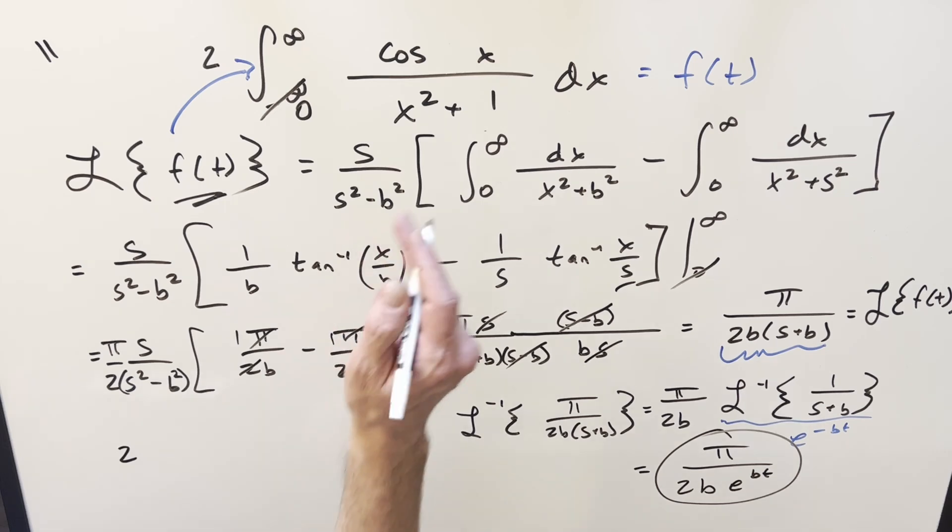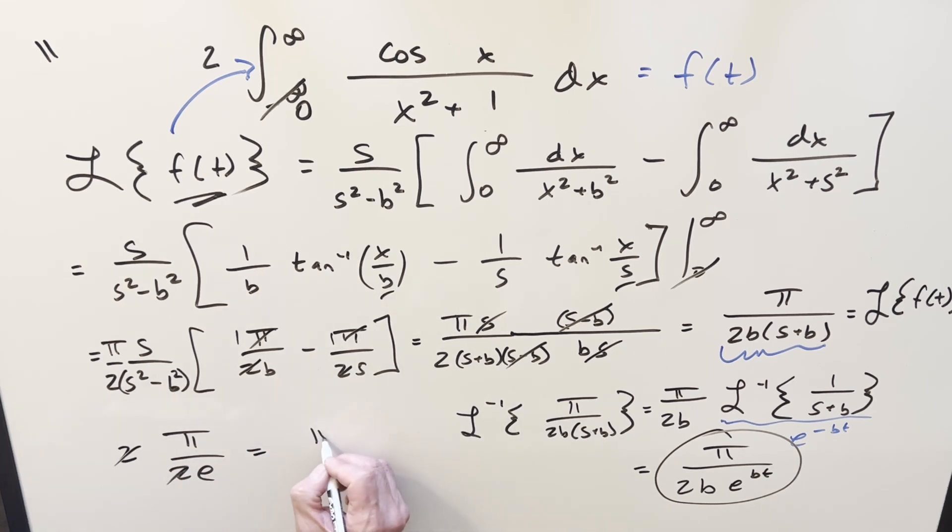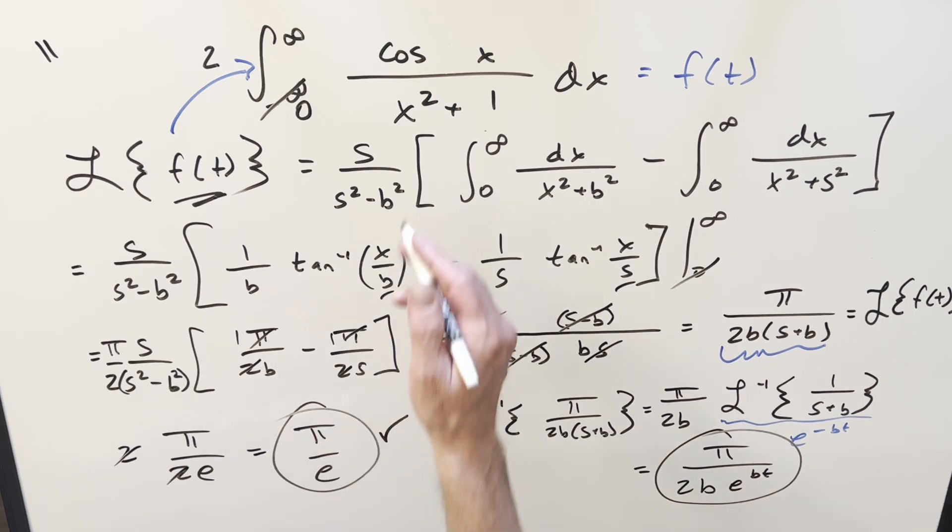So then using this formula here on this integral, we're going to have the 2 out front. b and t are 1, so we're going to end up with just pi over 2e here. But the 2s cancel, and the solution for this is just pi over e. So this solution is actually pretty beautiful. I almost wish they didn't parameterize it so I could have done this, but this is still pretty nice. Okay, that's it for today. Thanks everyone for watching. Have a good day.